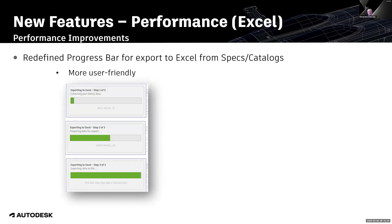The progress bar for export to Excel from spec has also been updated and is now more user-friendly. You will now see sequential progress steps. The first is exporting to Excel — step 1 of 3 — collecting part family data, showing all the components of your spec. Then a second progress bar: step 2 of 3, preparing data for export, again showing all components. And finally step 3 of 3: exporting data to file.